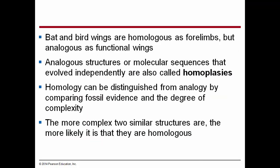Bat and bird wings are homologous as forelimbs, but analogous as functional wings. Analogous structures or molecular sequences that evolved independently are also called homoplasies. Homology can be distinguished from analogy by comparing fossil evidence and the degree of complexity. The more complex two similar structures are, the more likely it is that they are homologous.